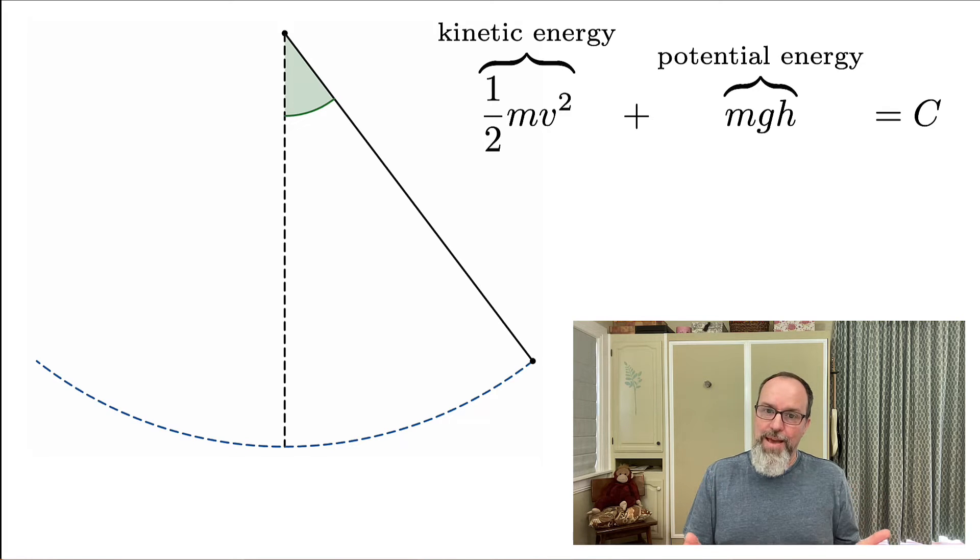In our pendulum case, as the pendulum gains kinetic energy and speeds up, it loses potential energy at the exact same rate, so the sum remains constant. Similarly, as the pendulum swings up and gains potential energy, it loses kinetic energy so that the sum stays the same. So we have this formula: kinetic energy plus potential energy equals a constant.